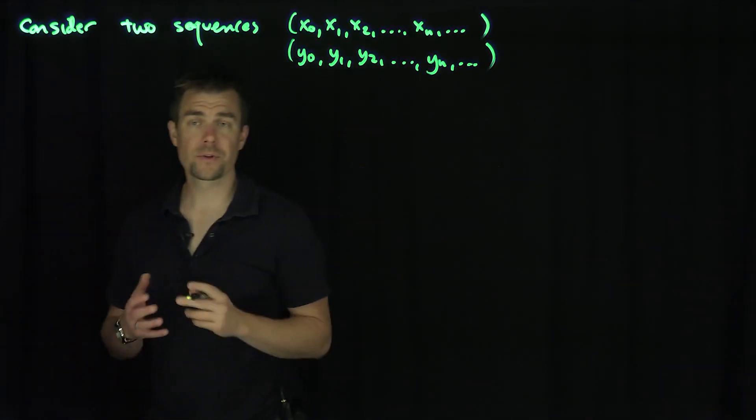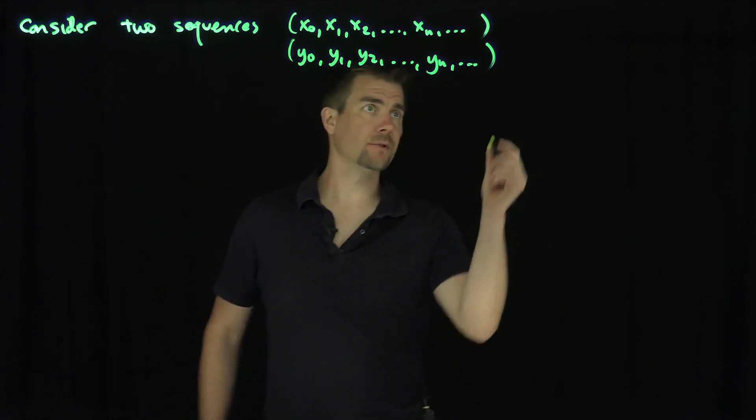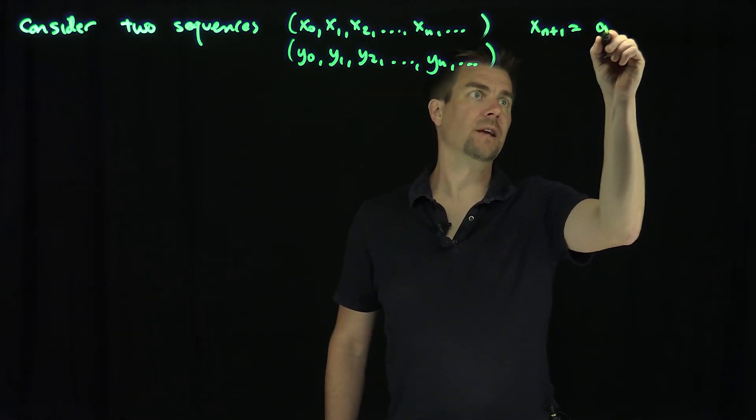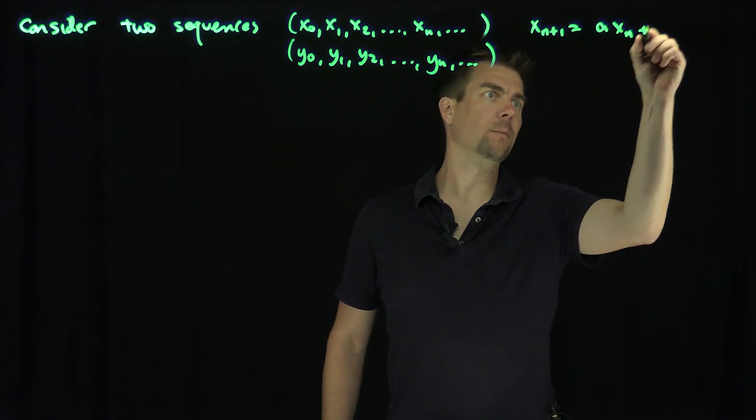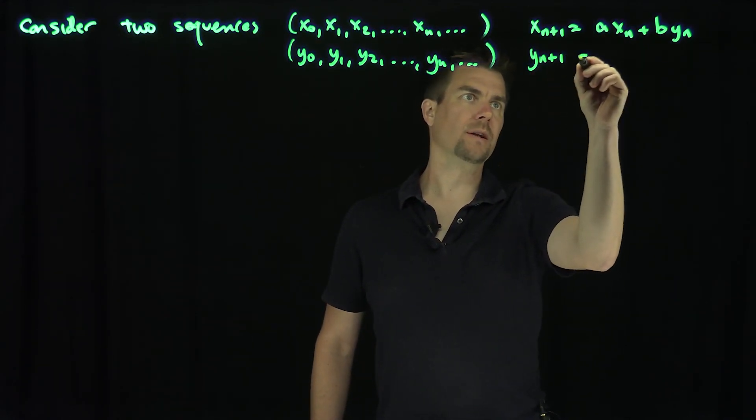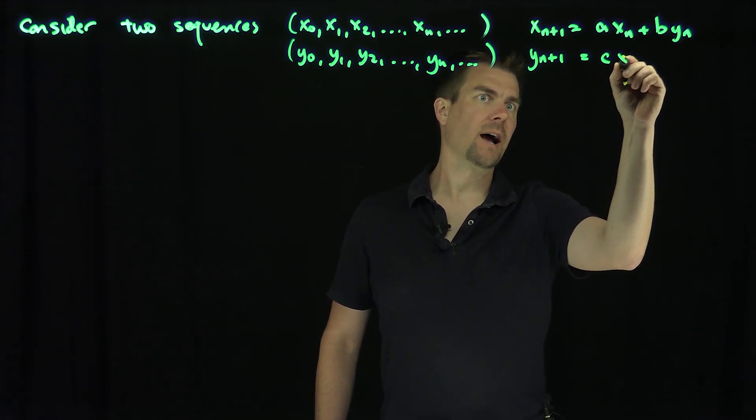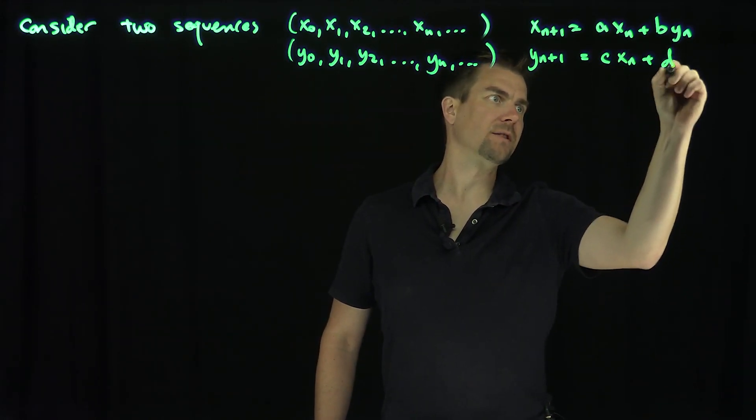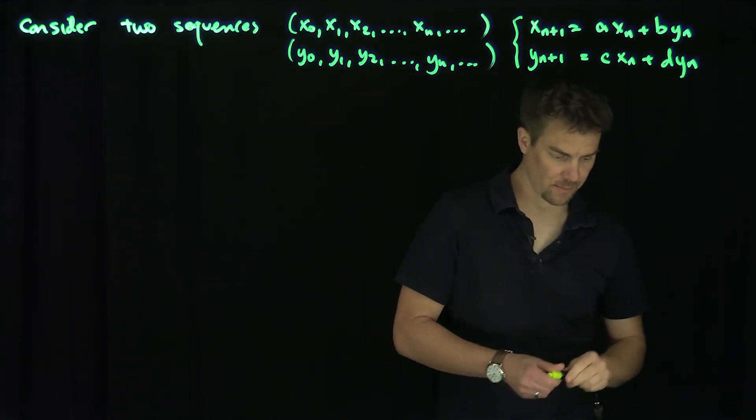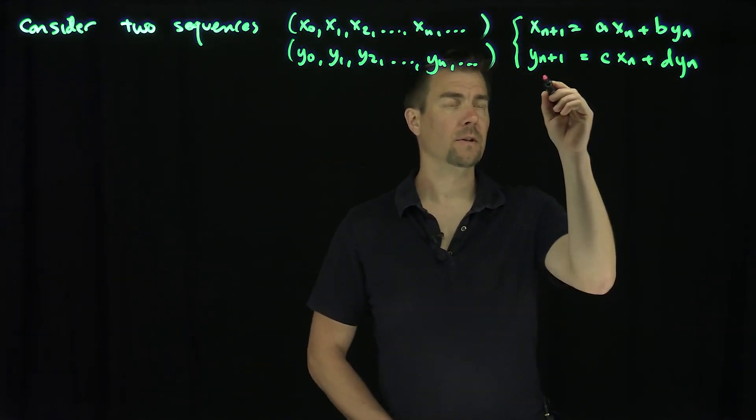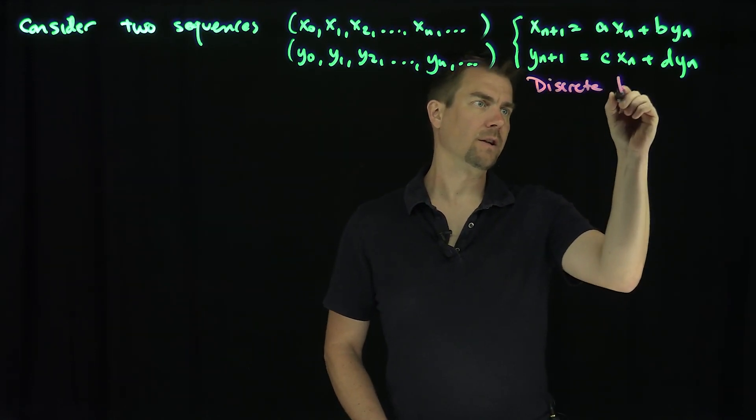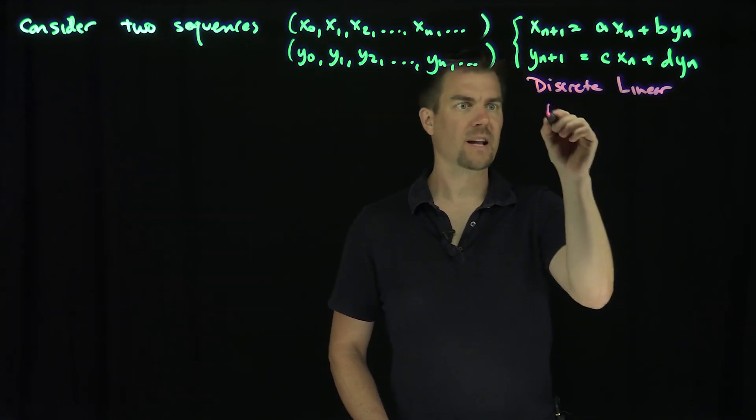And suppose that there's a linear relationship between these things. Suppose further that xn plus 1 is axn plus byn, and yn plus 1 is cxn plus dyn. So this is a discrete linear dynamical system.